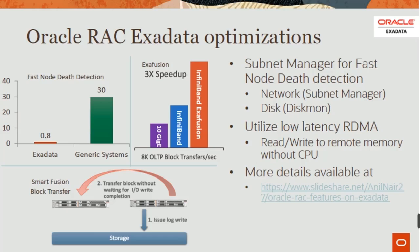Remote memory without CPU — more details are available. Smart Fusion block transfer: a transfer block without 85 ohm. Completion is to log rate at the storage level. This is an extra data optimization feature in Oracle 19c.